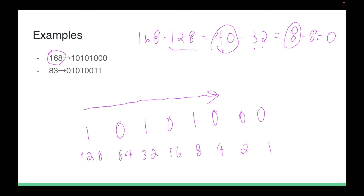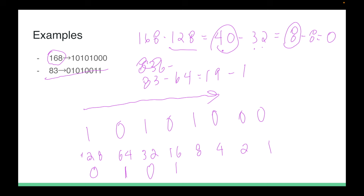Now for 83: using the same chart, the biggest that fits is 64, put a 1 (128 is too big, put a 0). 83 - 64 = 19. Biggest that fits into 19 is 16, put a 1. 19 - 16 = 3. Biggest that fits into 3 is 2, put a 1. 3 - 2 = 1. Put a 1 for the last position. Work your way from the biggest fitting value eastwards.